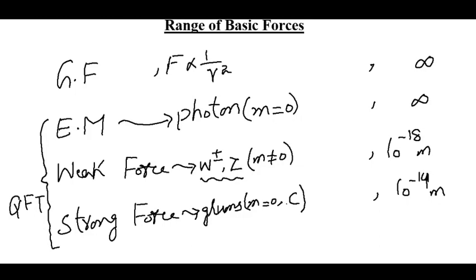So due to the color charge of gluons, the strong force is extremely short range. In summary, two forces — electromagnetic force and gravitational force — have infinite range. The other two fundamental forces are short range: the weak nuclear force has a range less than 10⁻¹⁸ meters, while the strong nuclear force has a range less than or equal to 10⁻¹⁴ meters. I hope you now have a clear understanding of the range of basic forces.